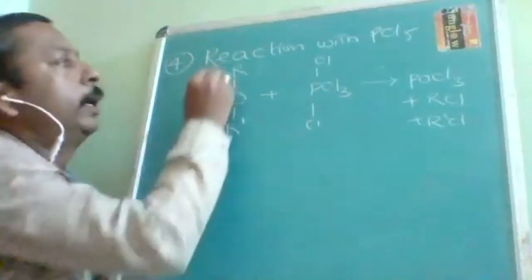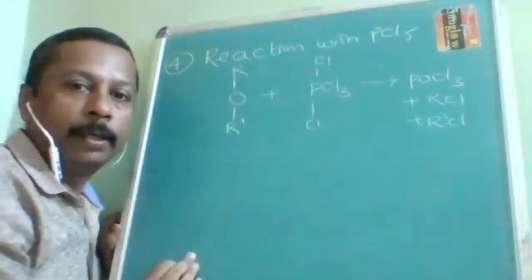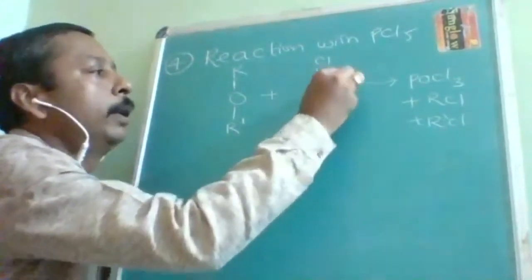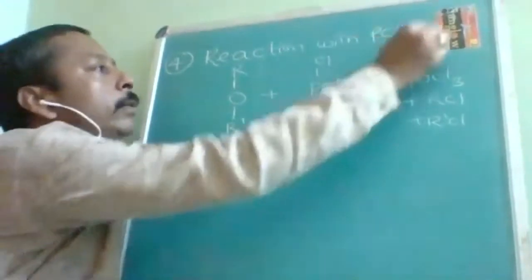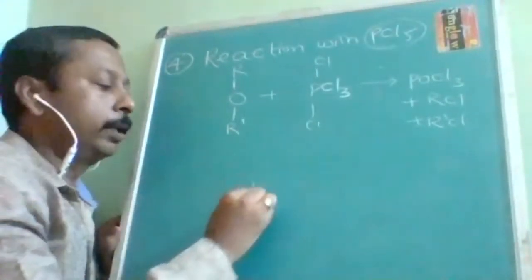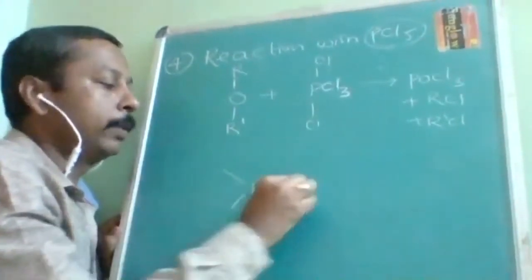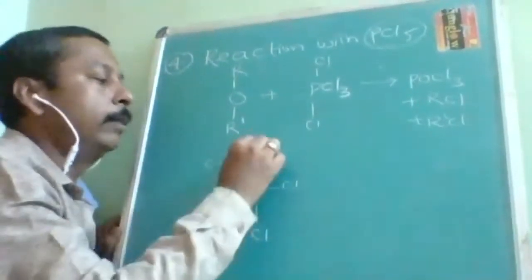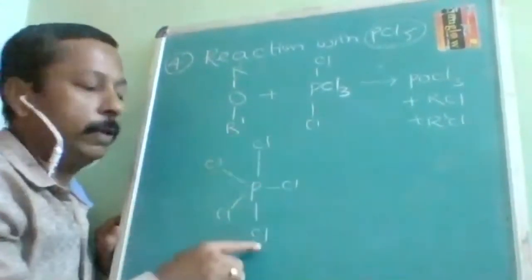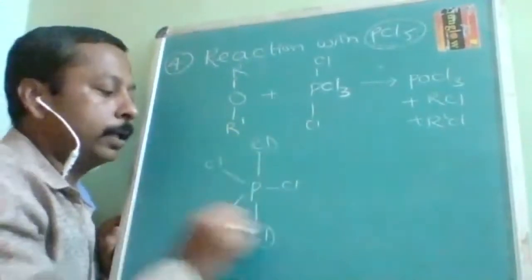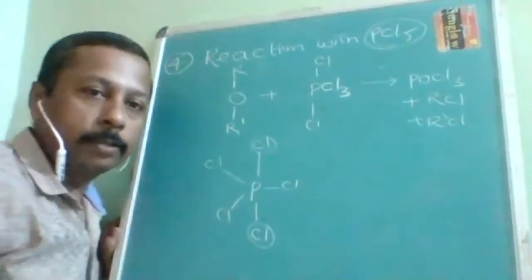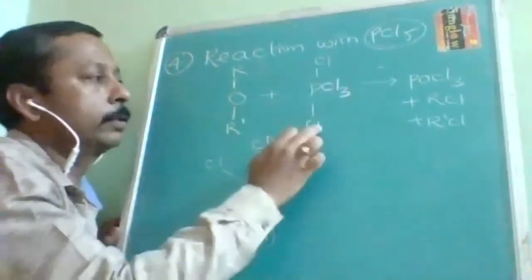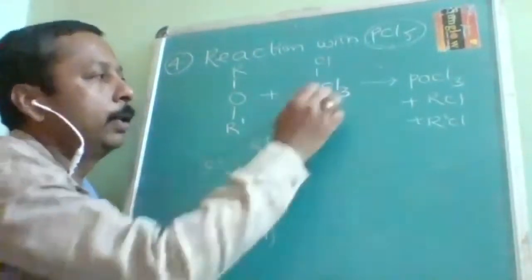Next property: reaction with PCl₅. As a memory technique, write the reaction like this. In PCl₅, not all bonds are identical — three chlorines are in a triangular plane, one above and one below. The two axial chlorines are very reactive because of large bond length and lower bond energy.